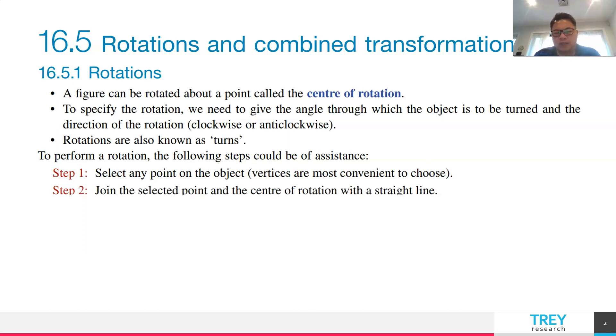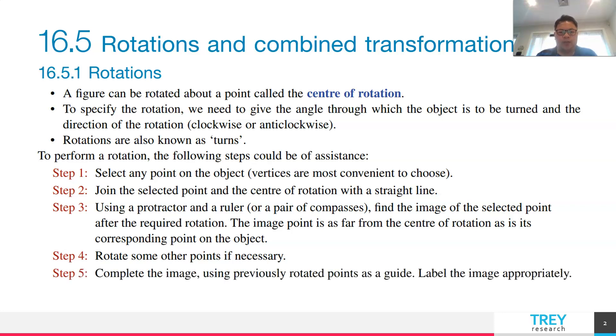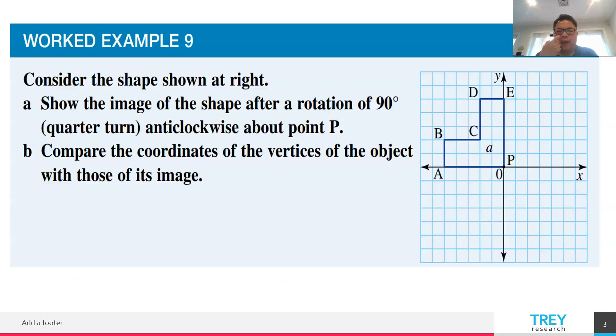First thing is to start out any point of the object, meaning the vertices. Next is to join the points with reference to the center of rotation with a straight line. After that, use a protractor to measure. If you need to rotate 90 degrees clockwise direction, then you have to measure 90 degrees from the reference line to find out where is the image point. After that, you rotate one or two points first. Once you get a basic shape, you can actually complete the full shape.